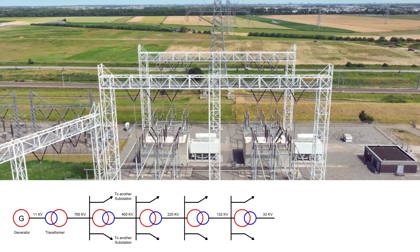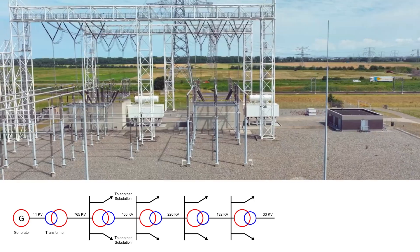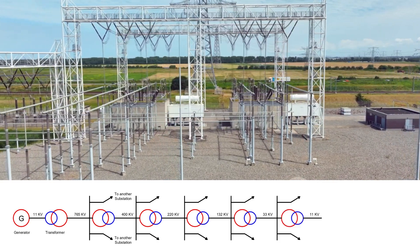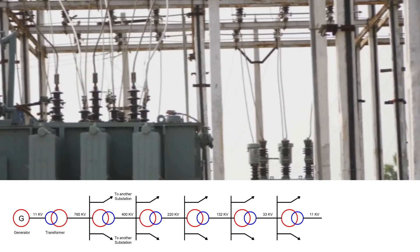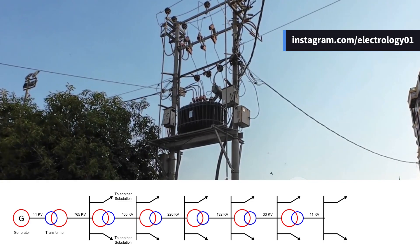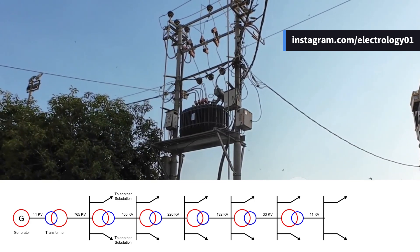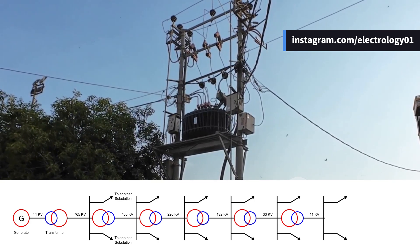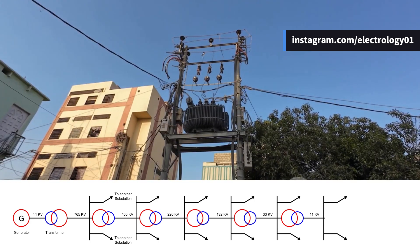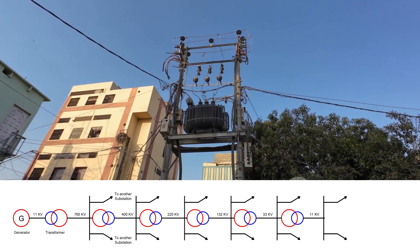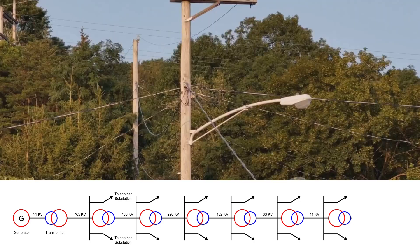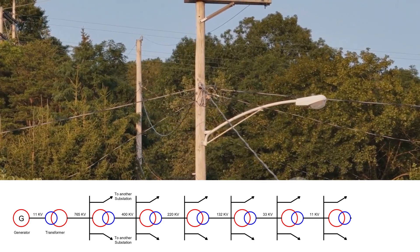Next comes the primary distribution system. At this point, the voltage — now at 33 kV — is distributed to primary distribution substations where it is stepped down to 11 kV. This 11 kV level is then distributed across local areas to supply large commercial loads, small industries, and neighborhood-level distribution transformers. These 11 kV feeders branch out and deliver medium-voltage power to localities, preparing it for the final step-down to the level used in homes.